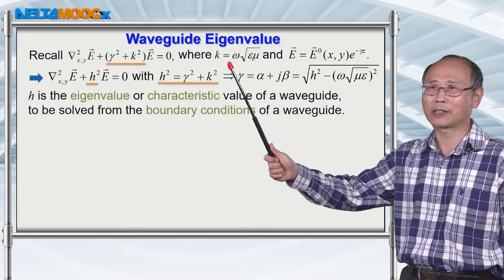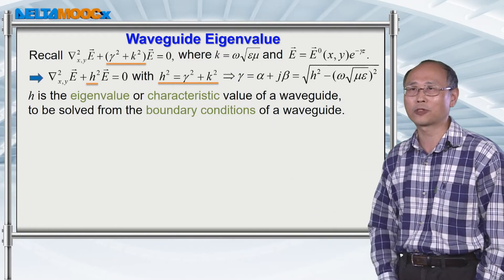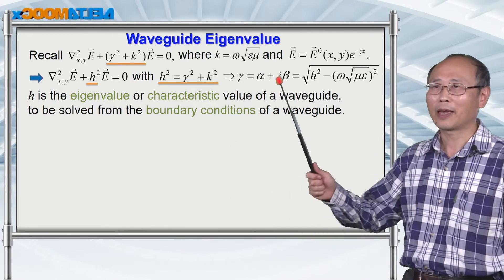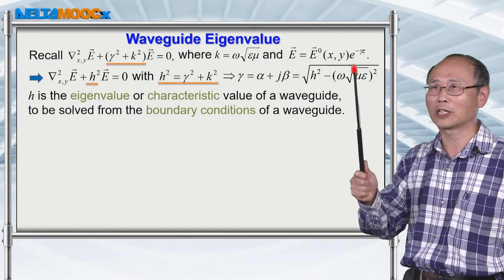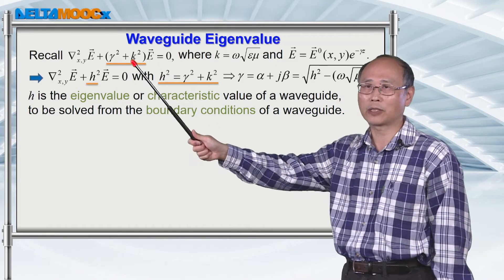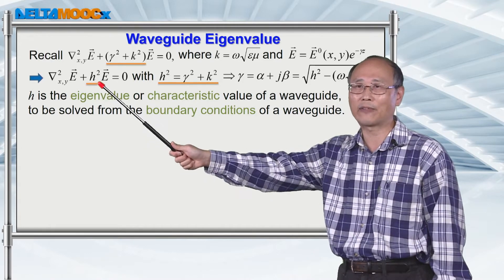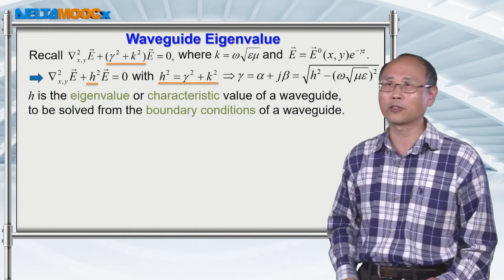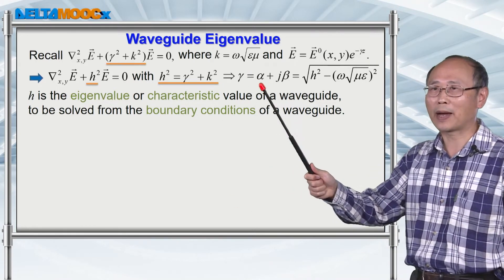Don't forget that this k is equal to omega multiplying with the square root of mu epsilon, and this square root of mu epsilon is 1 over the electromagnetic wave propagation speed. The mode profile along the transverse direction is described by this factor before the exponential minus gamma z. So let's group gamma squared plus k squared into a value h squared, and we call h the eigenvalue or characteristic value of the waveguide. So h squared equals gamma squared plus k squared, and the propagation of the wave inside the waveguide is described by this gamma parameter.